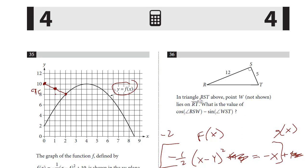In the triangle RST above, point W, not shown, lies on RT. What is the value of the cosine of RSW minus the sine of WST? So we have a point that's not shown that lies in RT. Here's RT. I'm just going to draw a point right here. Let's just say this is W.